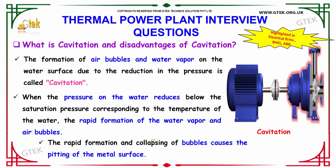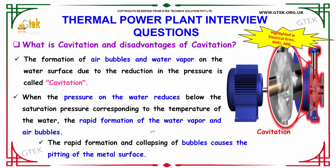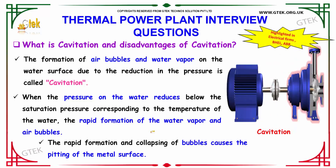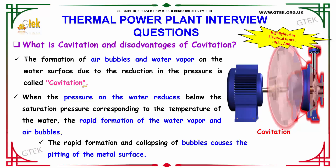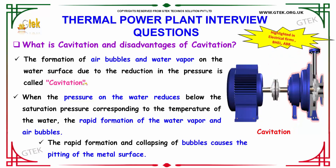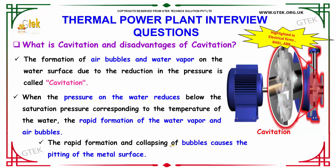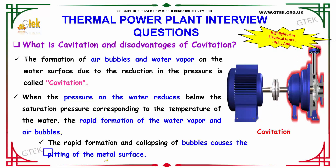What is cavitation and what are its disadvantages? The formation of air bubbles and water vapor on the water surface due to a reduction in pressure is called cavitation. When the pressure on the water reduces below the saturation pressure corresponding to the temperature of the water, rapid formation of water vapor and air bubbles occurs. The rapid formation and collapsing of bubbles causes pitting of the metal surface, which is the disadvantage of cavitation.